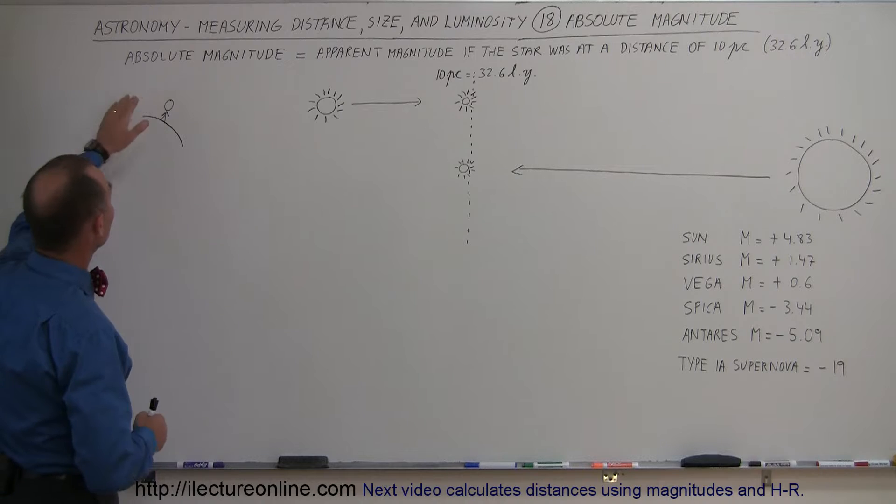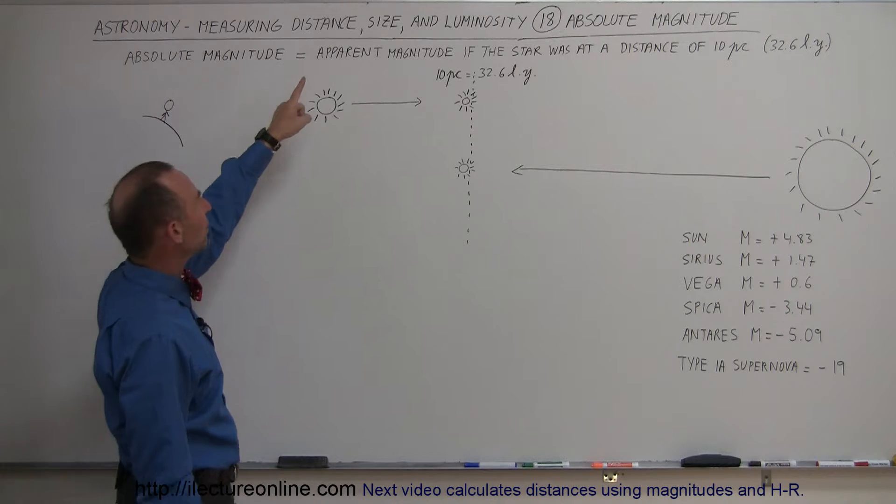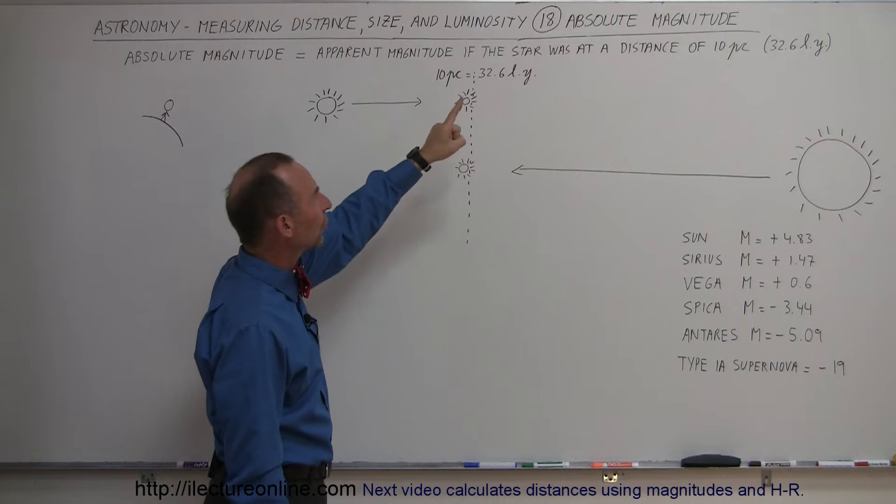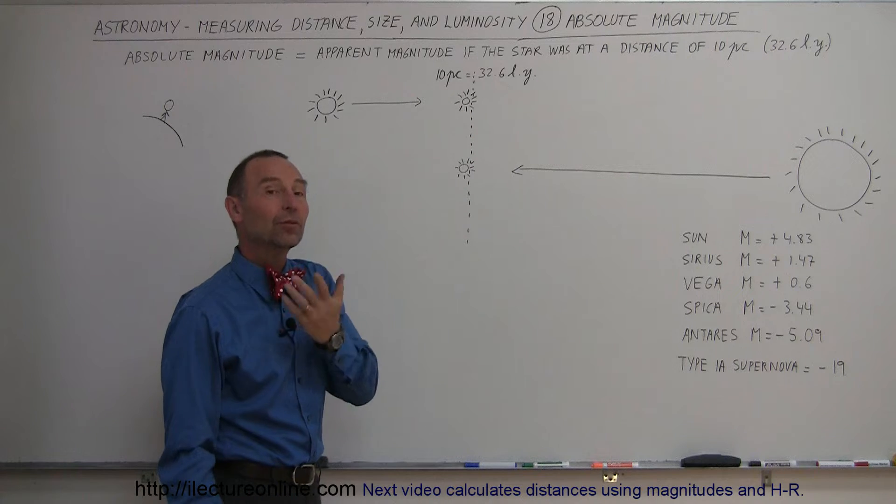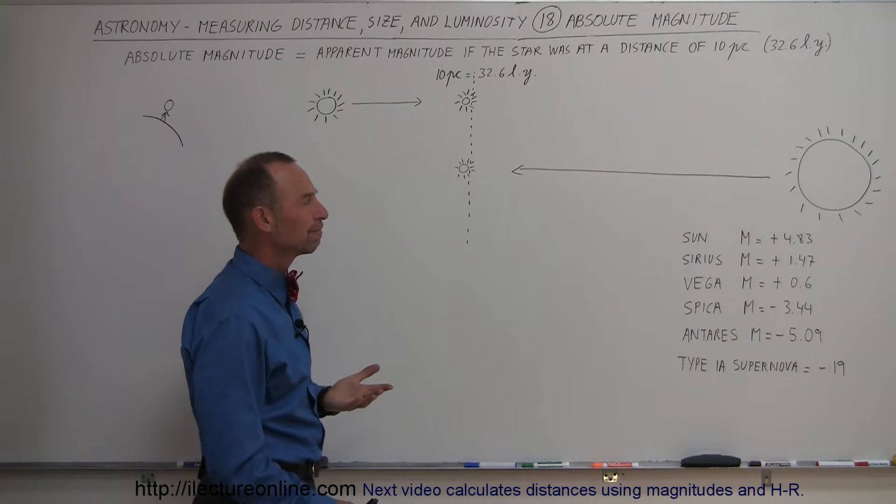So, what's the difference? Well, here it says it all. Absolute magnitude is equal to the apparent magnitude if the star was at a distance of 10 parsecs, which is 32.6 light years.